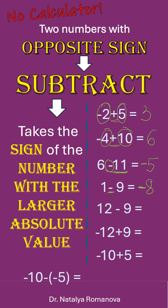12 minus 9, it is just 3. Negative 12 plus 9, it is negative 3. Negative 10 plus 5.